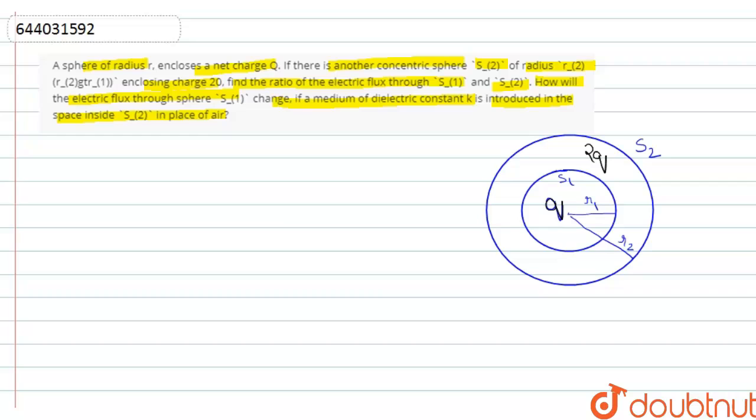We know that the formula of electric flux is enclosed by sphere. Sphere 1: phi 1 is equal to Q by epsilon 0, say equation 1.